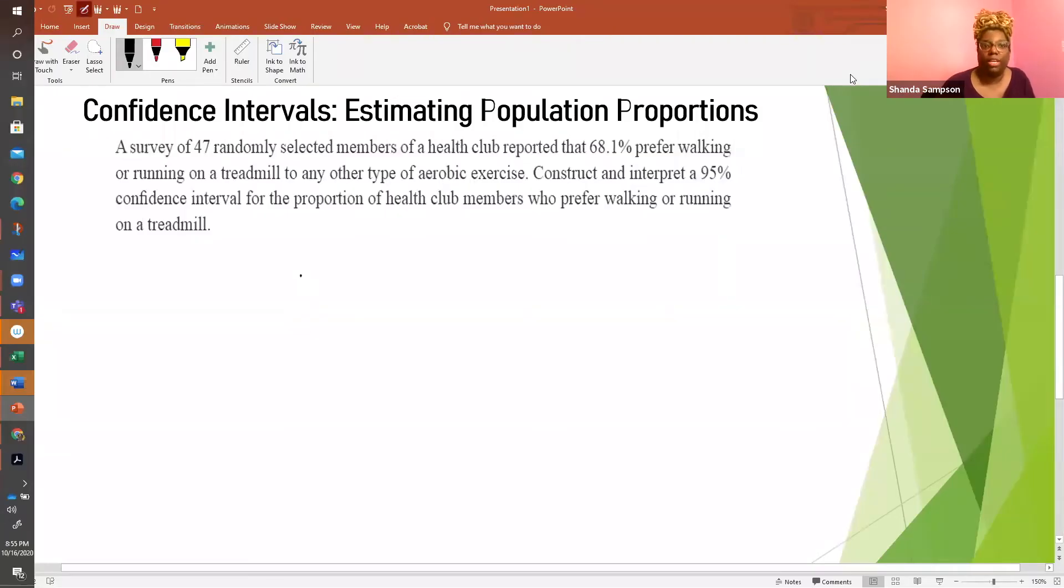But of course, don't forget to like, comment, and subscribe. So let's get started. A survey of 47 randomly selected members of a health club reported that 68.1% prefer walking or running on a treadmill to any other type of aerobic exercise. Construct and interpret a 95% confidence interval for the proportion of health club members who prefer walking or running on a treadmill. Just make sure the question we're asking is who prefer walking or running on a treadmill. Sometimes they'll tell you who prefers and then the question will ask who does not prefer. So make sure you know how to do the opposite.